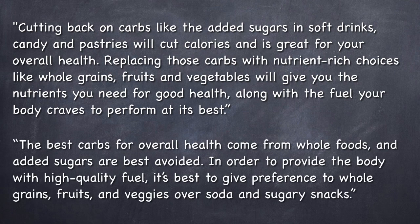And this is what we did with it. The best carbs for overall health come from whole foods and added sugars are best avoided. You see? That's all general. No examples. And now, we continue again from more general and we end with examples. In order to provide the body with high-quality fuel, it's best to give preference to what? To examples. Whole grains, fruits and veggies, over soda and sugary snacks. See? Examples come last.